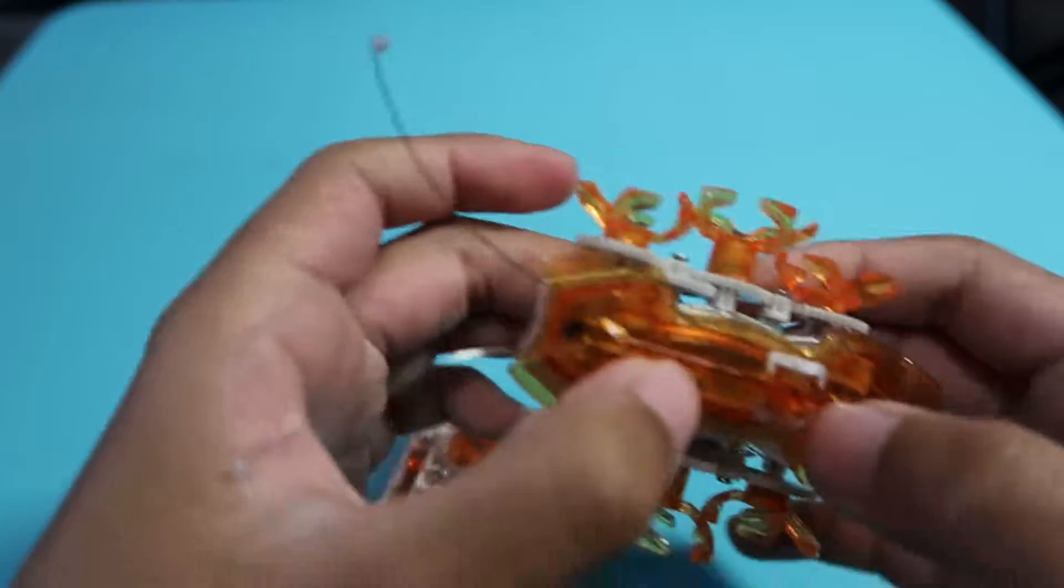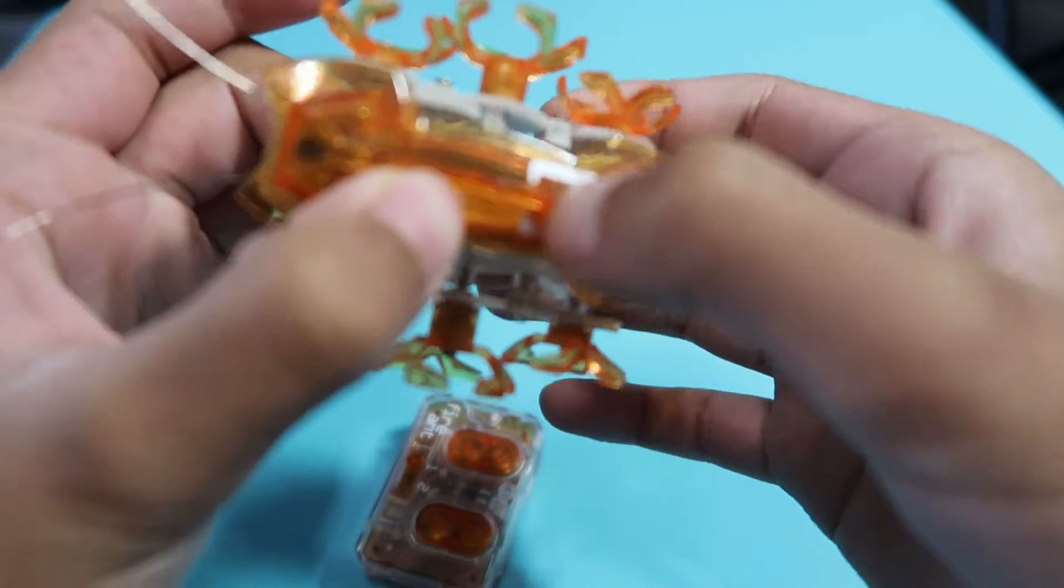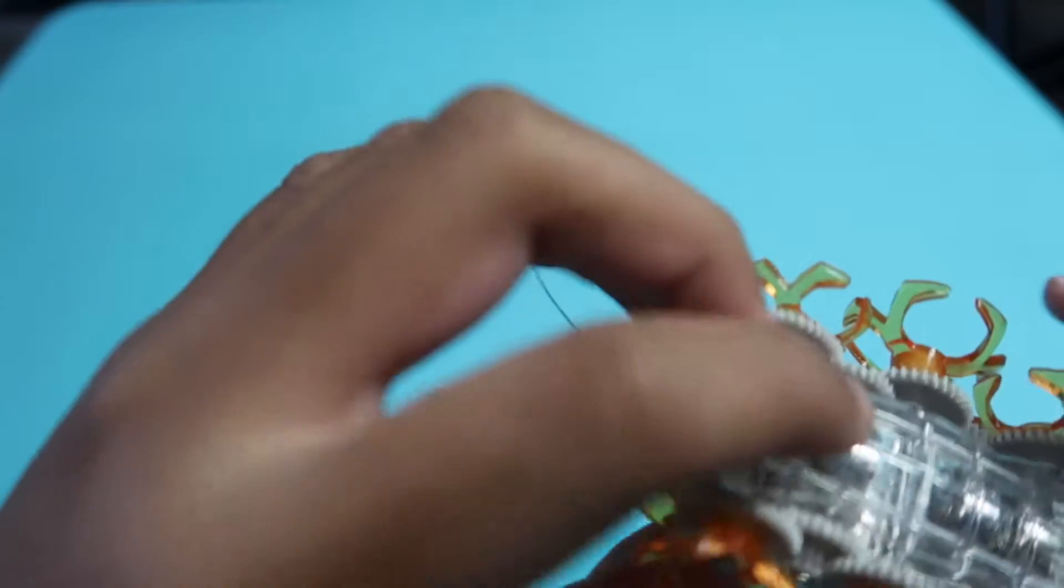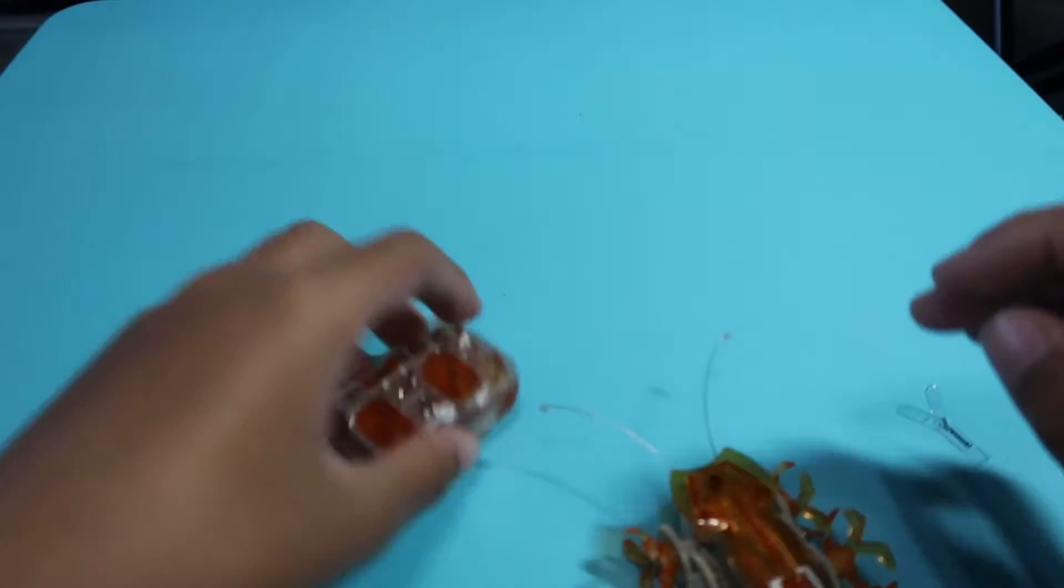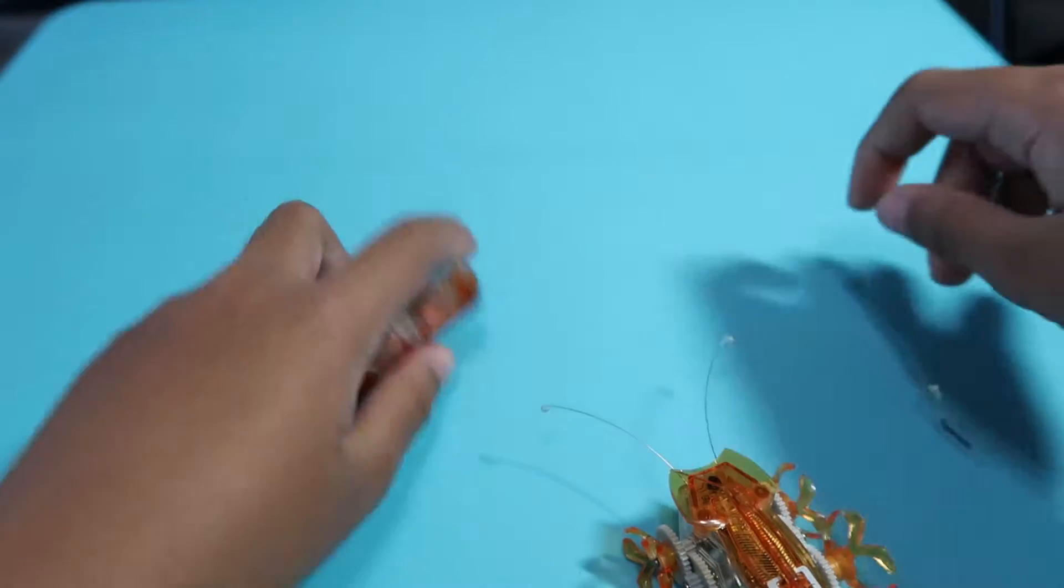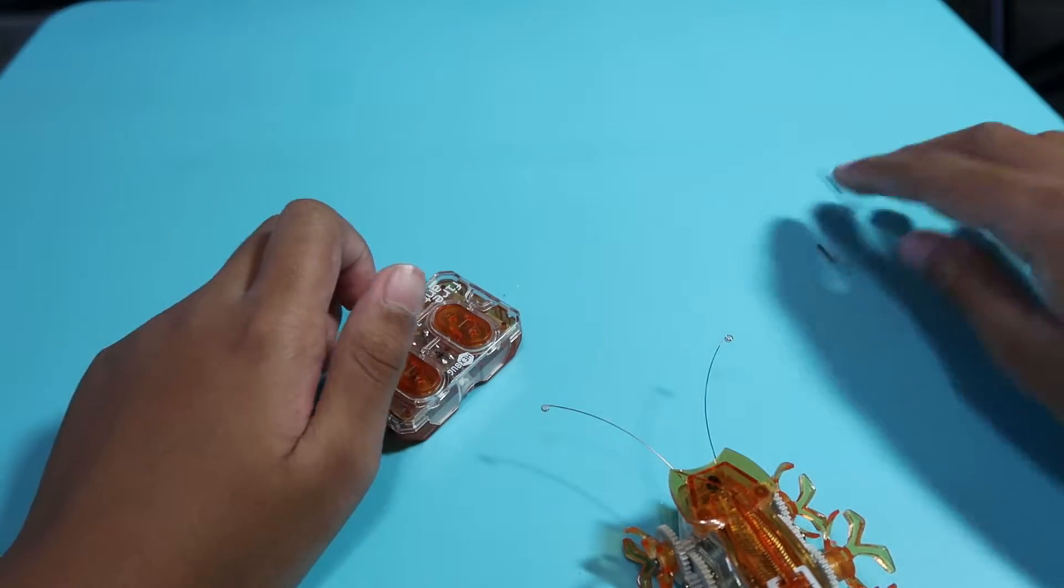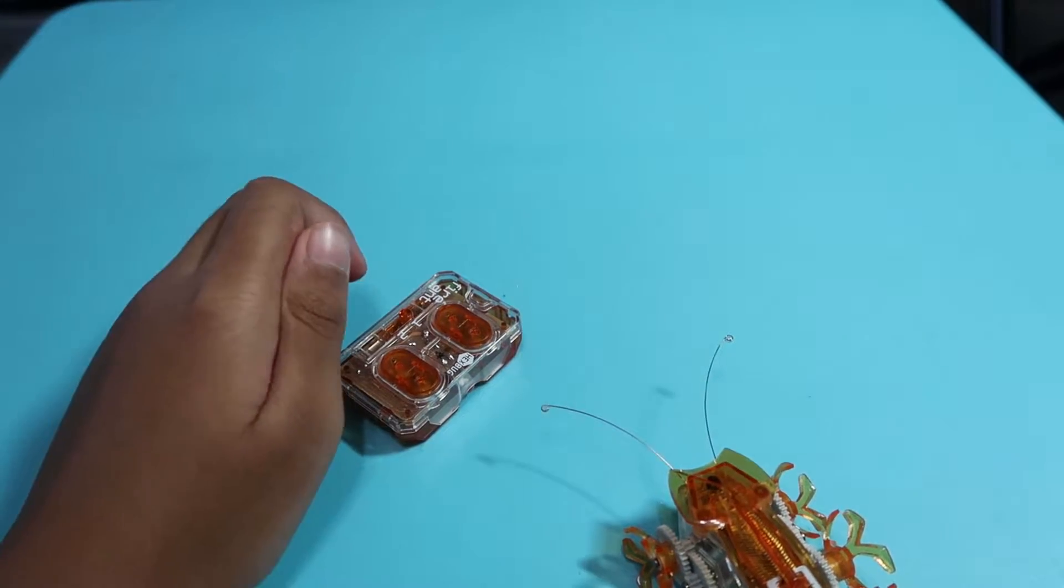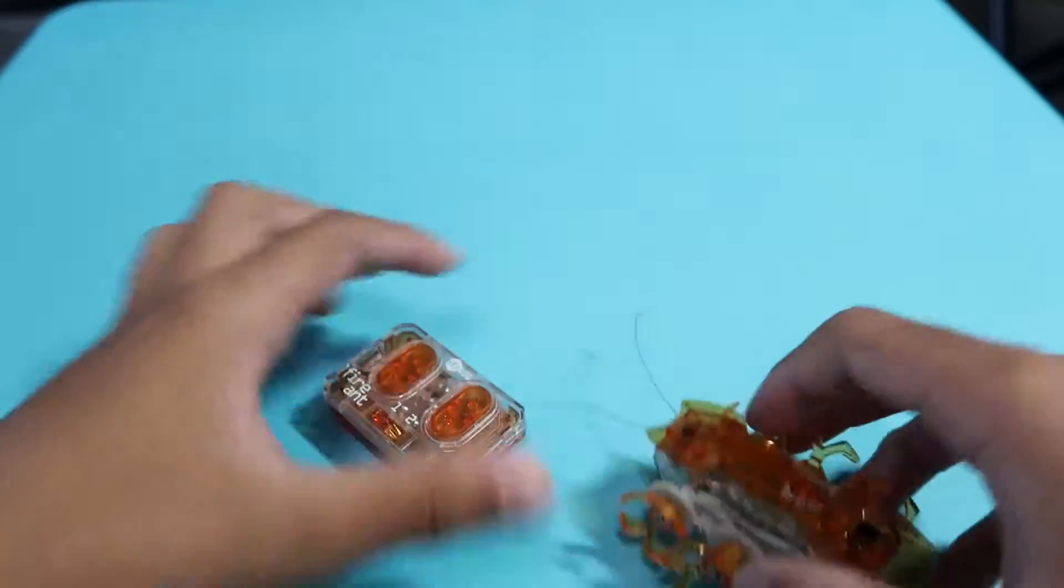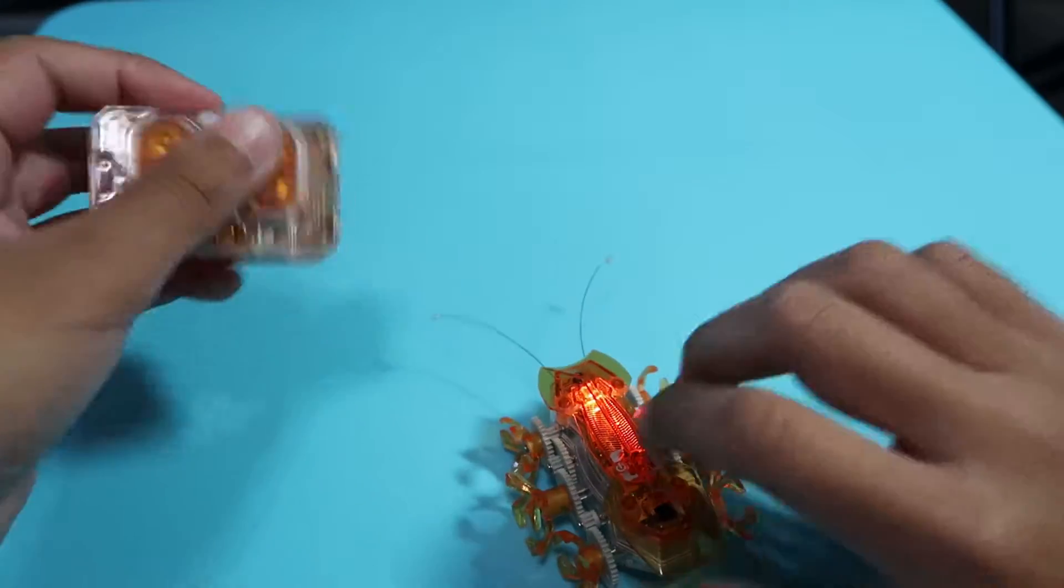To turn this on, you just press this. I think it should turn on. You'll have to remove these tags. Remove this tag, and I'm going to remove this tag. So I'm going to turn this on. As you can see, it's glowing red now, which is pretty cool.